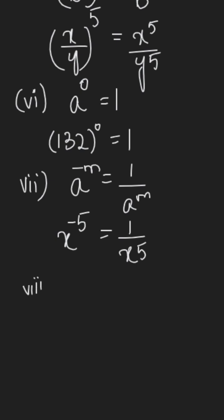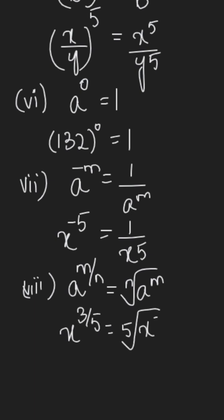Then comes the last rule which is the fractional exponent which says a power m over n will be equal to the nth root of a power m. So x power 3 over 5 will be equal to the 5th root of x power 3.